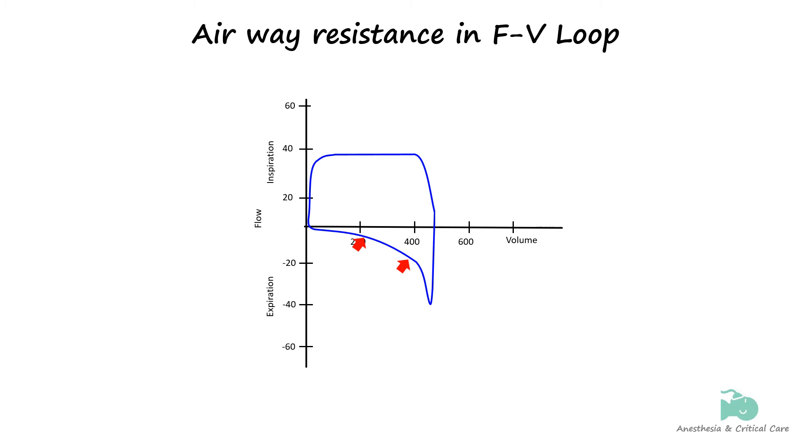A key indicator for airway obstruction is a scooped or concave shape of the expiratory limb, suggesting difficulty in expelling air due to obstruction.